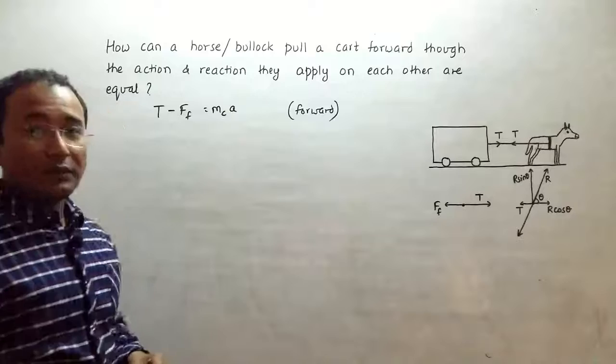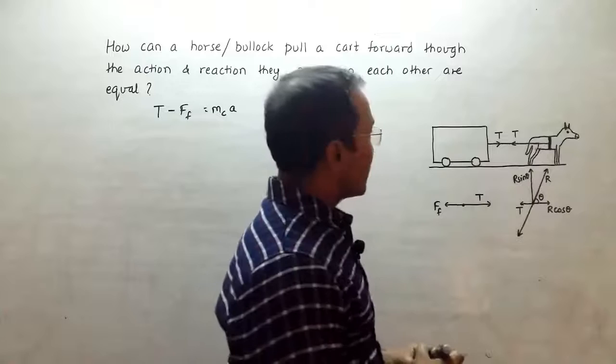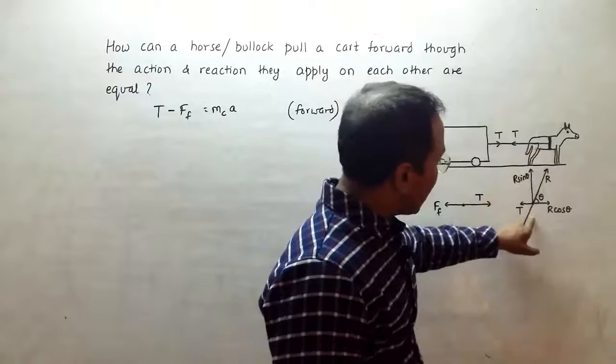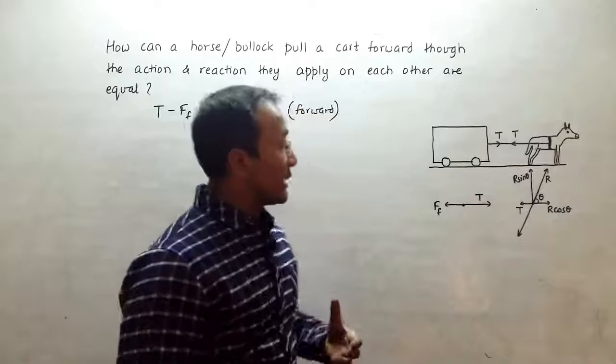Now if you consider the horse as a system, the horse will be exerting force somewhat like this in this direction, so we have shown the force like this. Because of that, the earth or the surface will be exerting an equal and opposite reaction force like this.